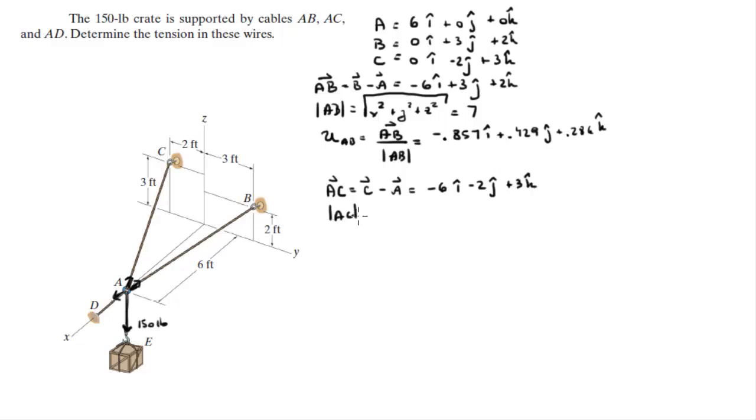The magnitude of a, c is equal to 7 by using the same formula here. And the unit vector a, c, which you find by dividing a, c by its magnitude comes out to be negative 0.857 in the i minus 0.286 in the j plus 0.429 in the k.